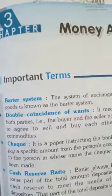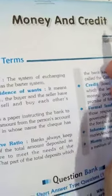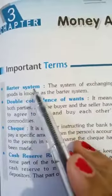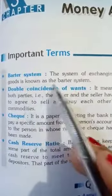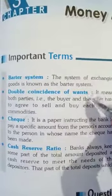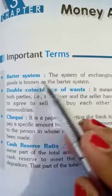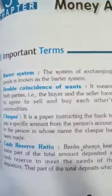Good morning 10th class. This is the last and revision lecture of our chapter Money and Credit. I am going to tell some important terms. Like barter system — as you know, the system of exchanging goods is known as the barter system. Before money, we used things as a medium of exchange — commodities.